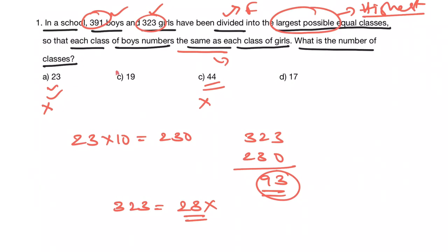Now check option B. For 391, is 19 the factor of 391? 19 times 20 is 380, 11 is the remainder. That means 391 is not the multiple of 19. So 19 is not the factor of 391, so option B is also eliminated.